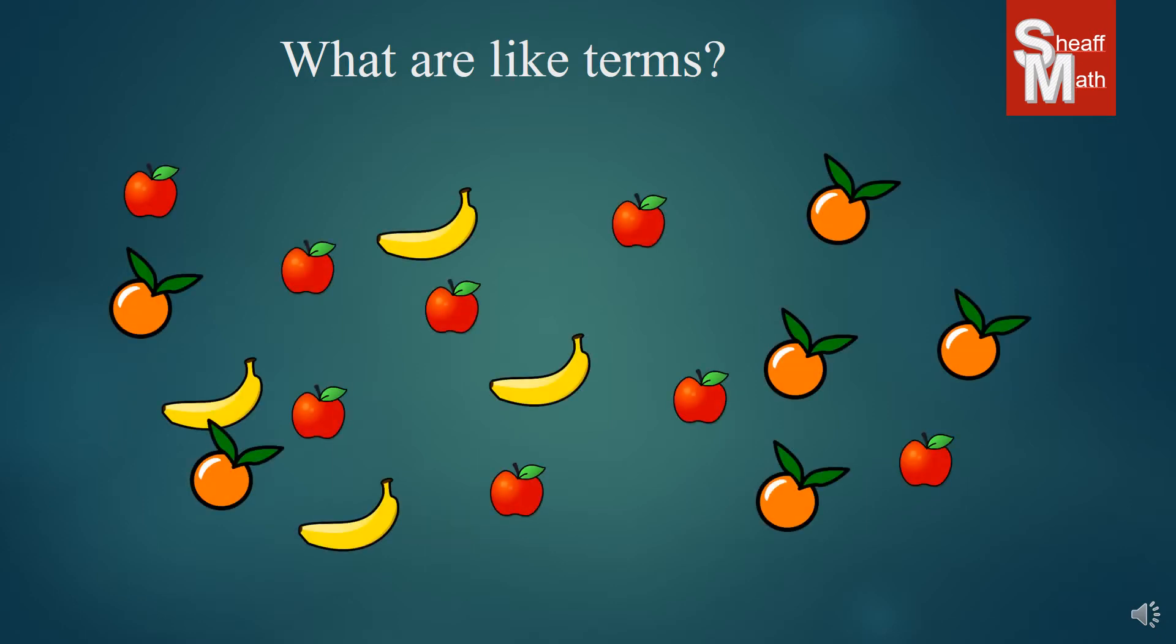Now when I teach my students how to combine like terms, I always give this example. Imagine somebody took a bowl of fruit and spilled it on your table and you had to tell them what they had there. What kind of fruit do we got there? How much?